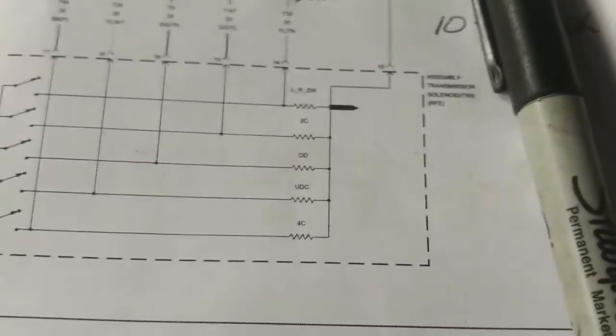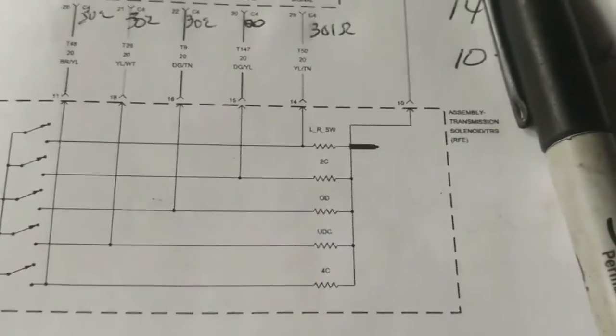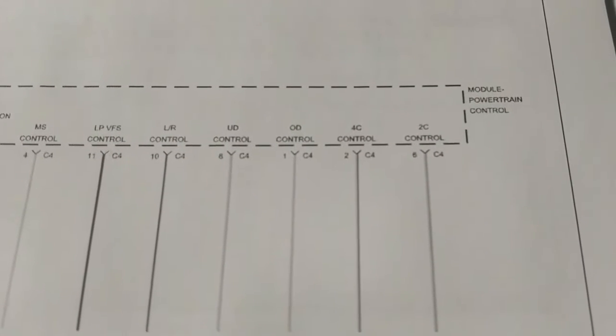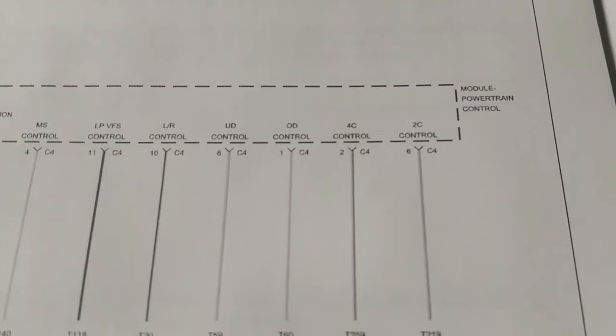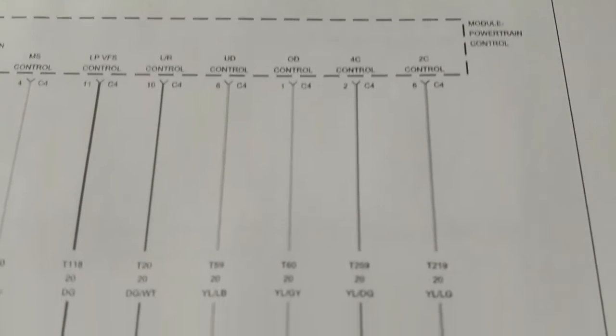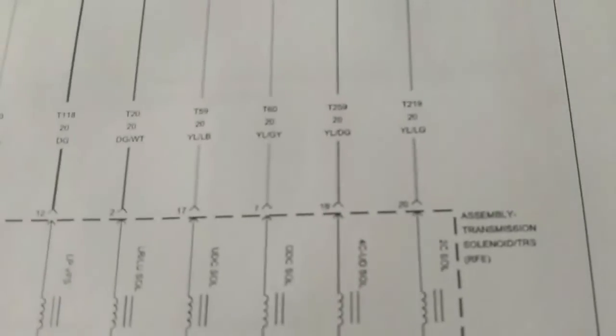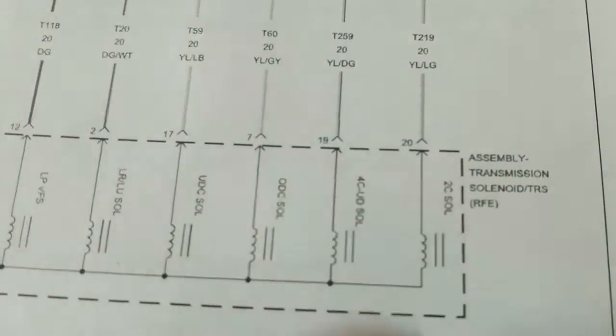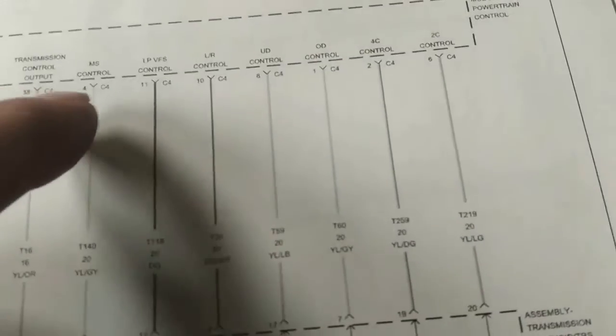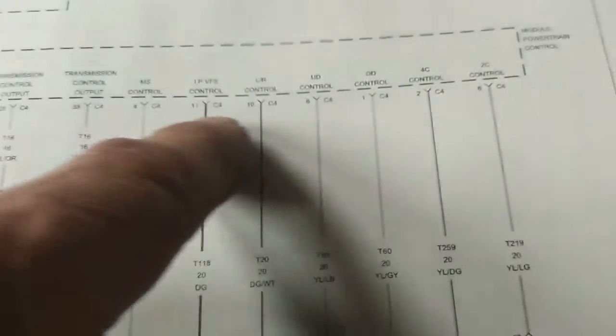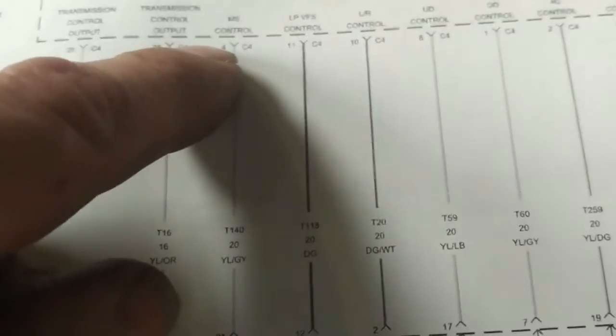That means pulling the valve body down. I'm also going to check the fourth clutch solenoid. The 4C control solenoid is pin 2 at connector 4, so I've got one pin of the ohmmeter connected to that circuit — a yellow dark green wire going to pin 19 at the transmission connector — and it shows 0 ohms resistance on that wire.